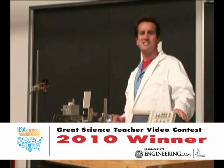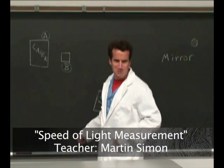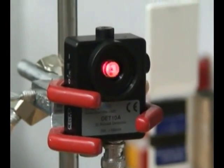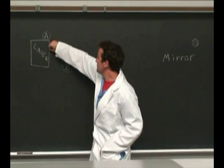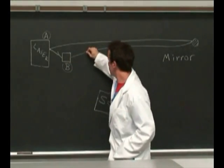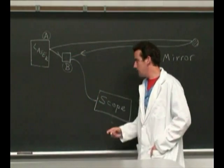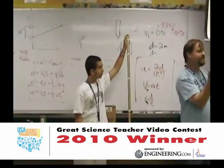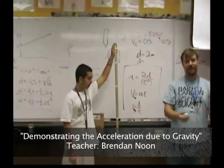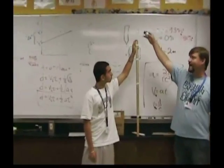Measuring the speed of light these days is a simple college laboratory exercise with the help of an oscilloscope. The laser sends a signal to the receiver at point B, but the same signal is sent to a mirror and reflected back to the receiver, and this takes a certain amount of time. The signals are sent to an oscilloscope, and the scope reads the delay. I'll take a video and use stop-frame so you can see this with time frames.